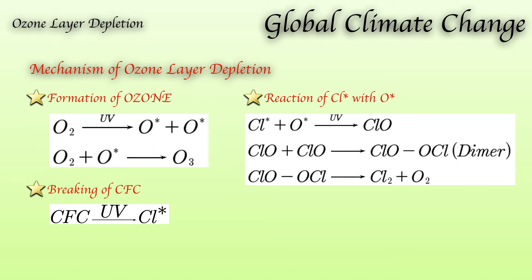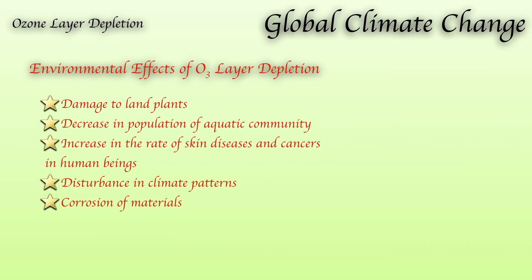This reactive chlorine reacts with reactive oxygen to form ClO. This ClO can form a dimer, and when this dimer breaks down, it produces chlorine and oxygen. So chlorine converts reactive oxygen back into oxygen, preventing the formation of ozone. This is the mechanism of ozone layer depletion.